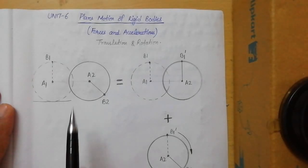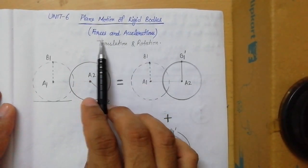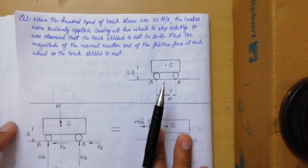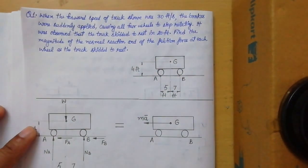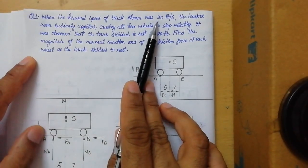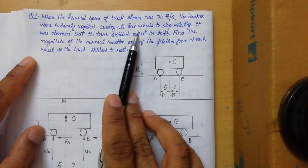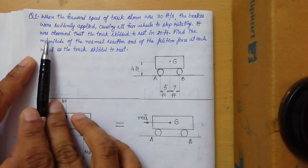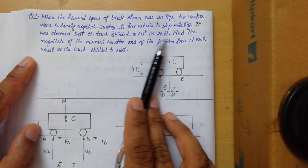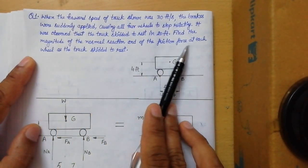Hello friends, today we will solve the first problem on the topic of plane motion of rigid bodies: forces and accelerations. The problem states: when the forward speed of the truck shown was 30 feet per second, the brakes were suddenly applied causing all four wheels to stop rotating. It was observed that the truck skidded to rest in 20 feet. Find the magnitude of the normal reaction and friction force at each wheel as the truck skidded to rest.